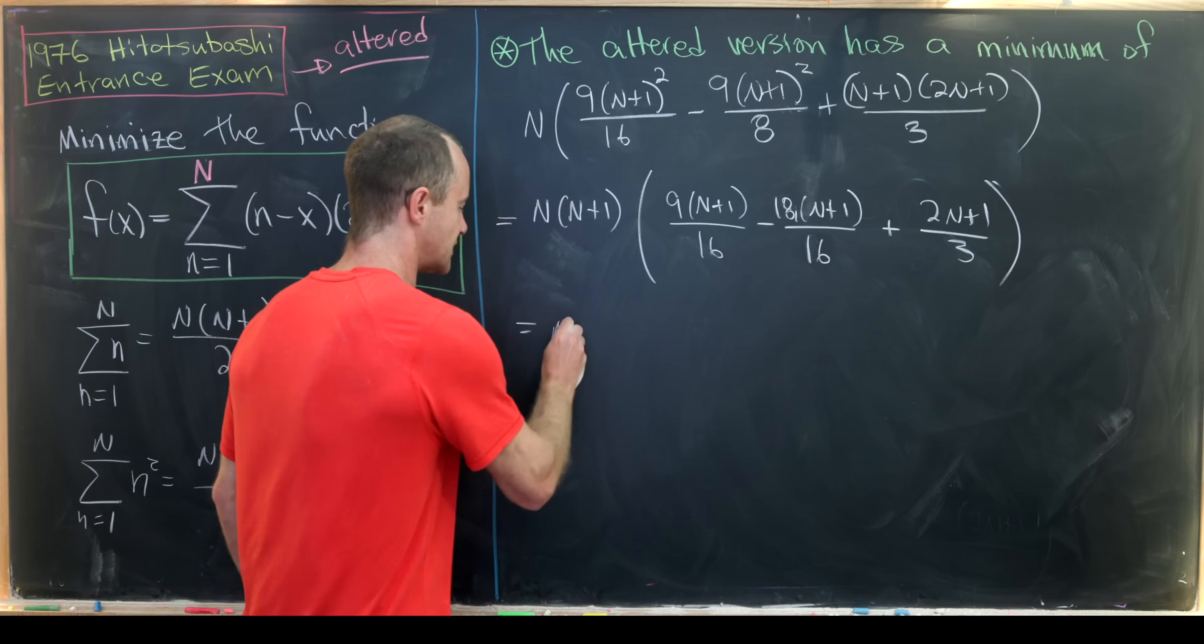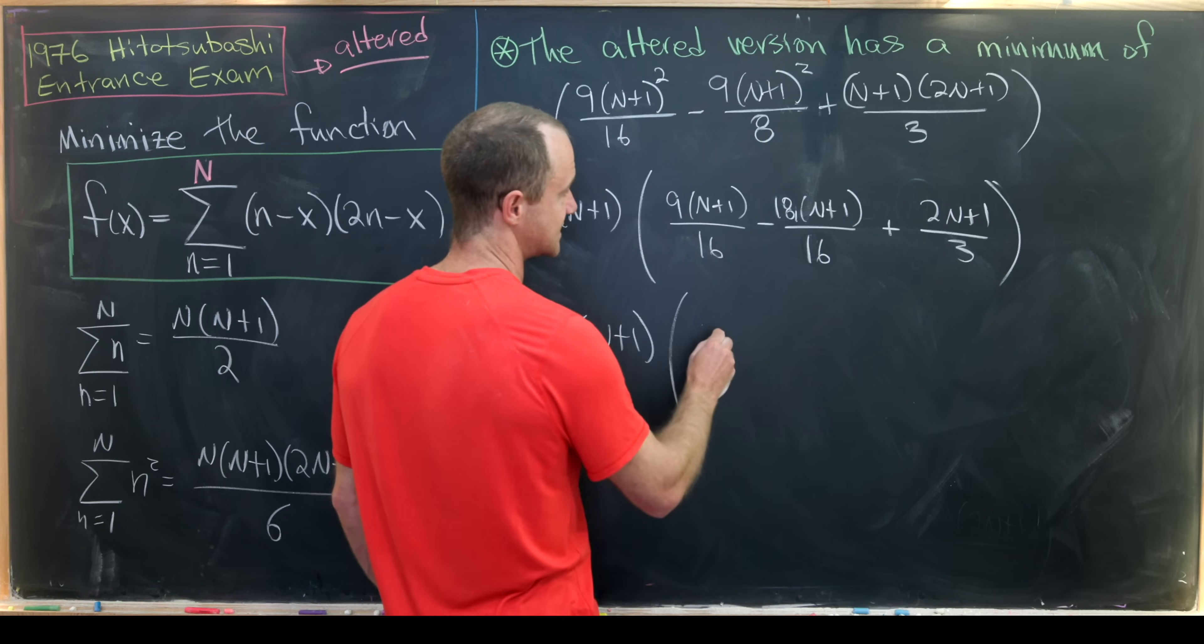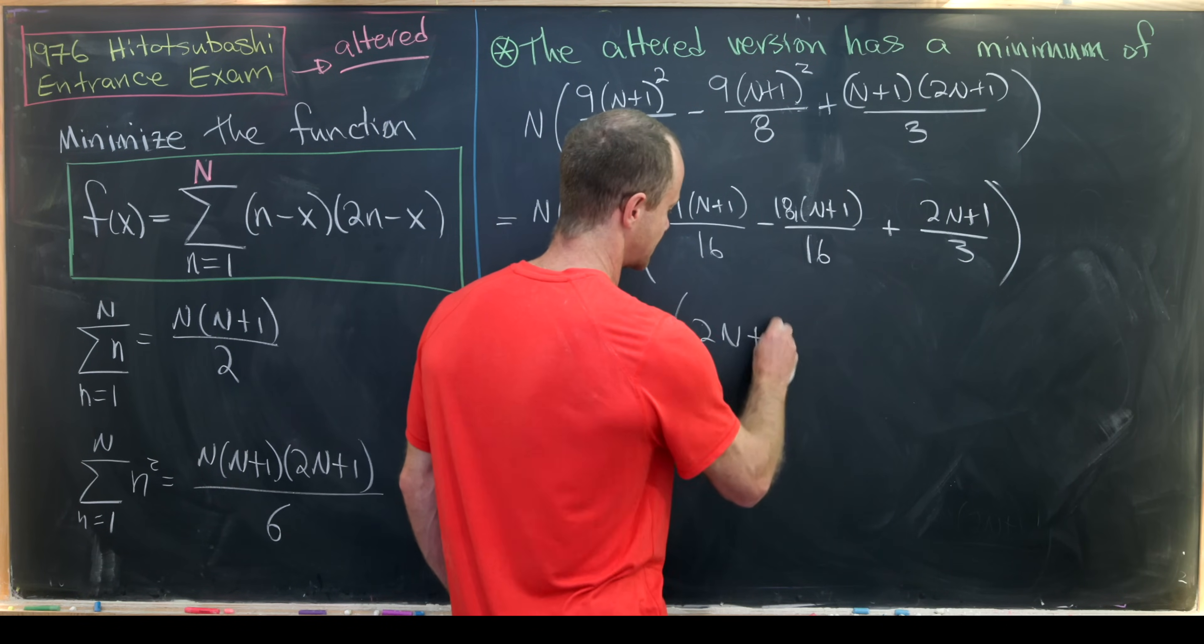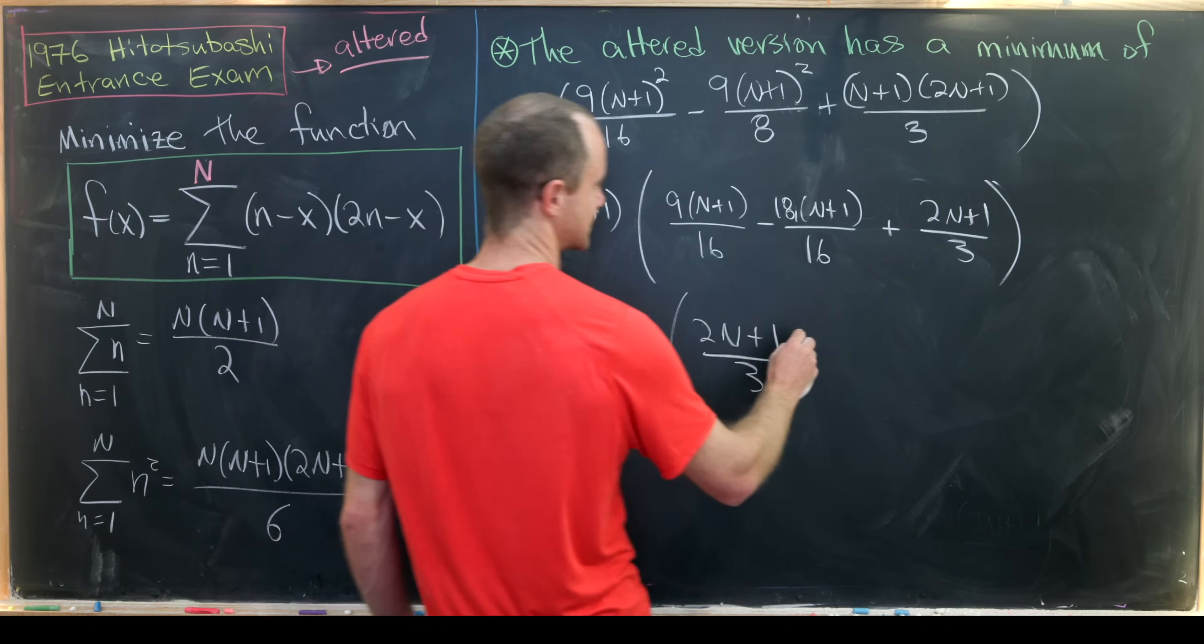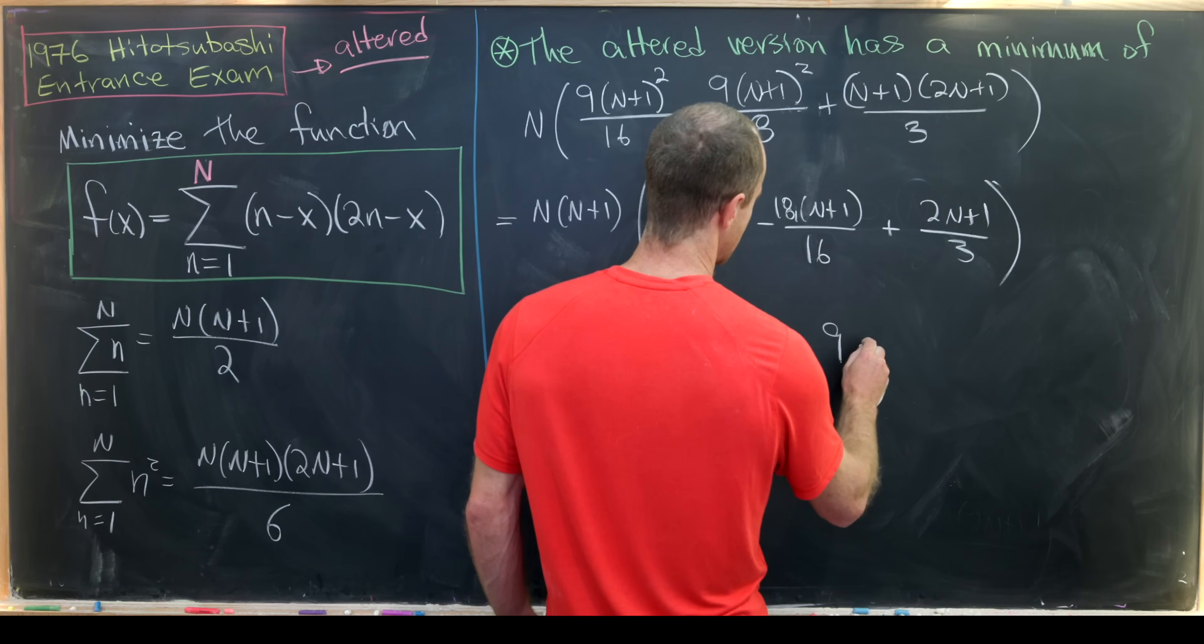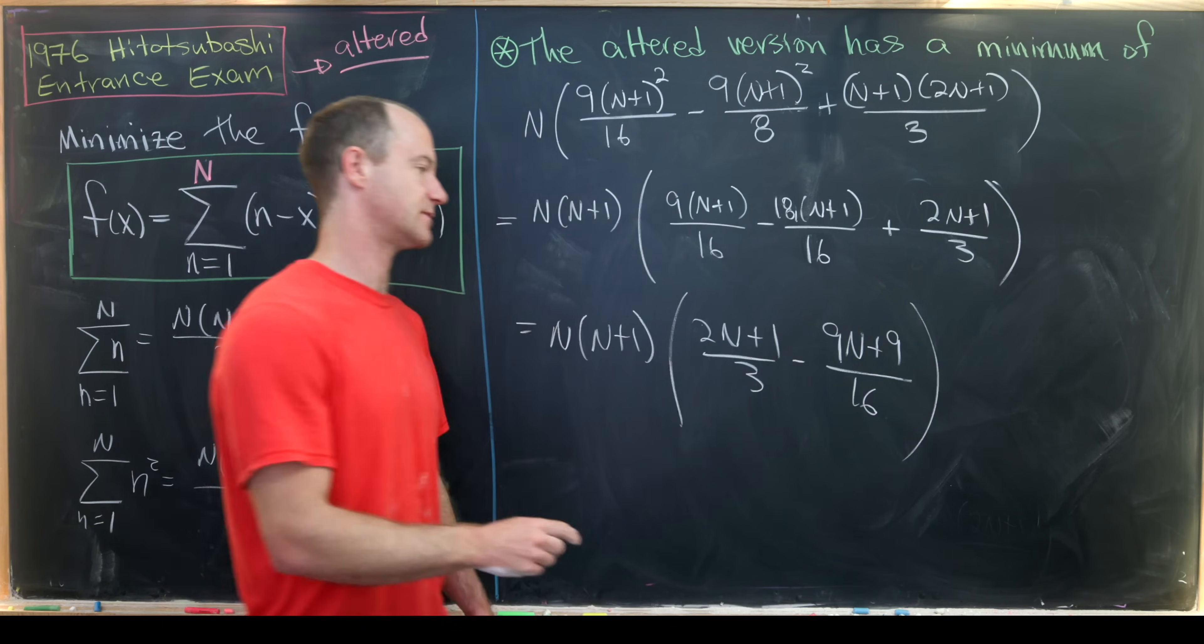Okay so that gives us N(N+1) times (2N+1)/3 minus 9(N+1), so 9N+9 over 16 when all of that simplification occurs.